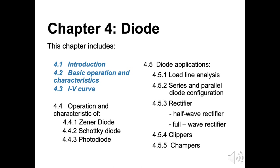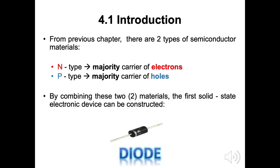In Chapter 4, we will discuss sub-chapters 4.1 until 4.3. Diode will be introduced in the beginning, followed by the basic operation and characteristics of the diode. For the last three sub-chapters, we will discuss about the current and voltage curve graph. Now let's start with the introduction of the diode.